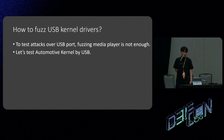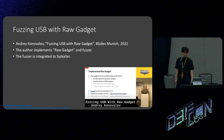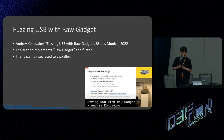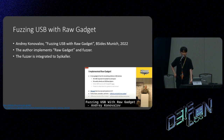So far I've talked about how to fuzz the automotive media player via USB. But to test attacks over USB ports, media player fuzzing is not enough. Let's test the automotive kernel by USB. There is already a great research project on fuzzing the USB kernel stack. That project implements a raw gadget for USB kernel fuzzing and integrates a USB fuzzer into syzkaller. syzkaller is the best fuzzer for kernel fuzzing, so we just use syzkaller to fuzz the USB kernel stack in the car.